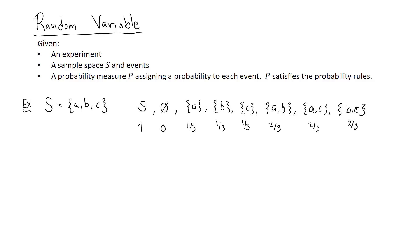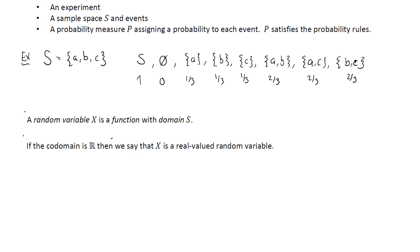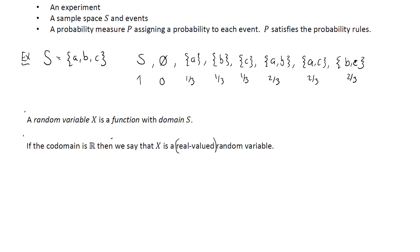Based on this we can define a random variable, and the definition is pretty straightforward. A random variable is simply a function whose domain is the sample space S. The most common codomain of a random variable is the collection of real numbers. If the codomain is ℝ, then we have a real-valued random variable. It is common to skip the name 'real-valued,' so if you just hear the word 'random variable' you may assume it is real-valued.